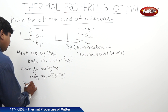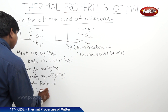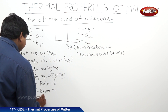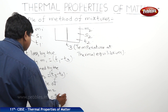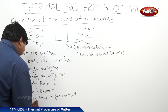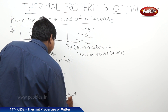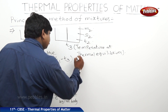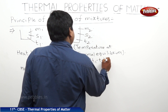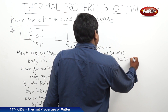By the rule of equilibrium, loss in heat is equal to gain in heat. That is, loss of heat by the hot body is equal to gain of heat by the cool body. Therefore: M1·S1·(T1 − T3) = M2·S2·(T3 − T2).